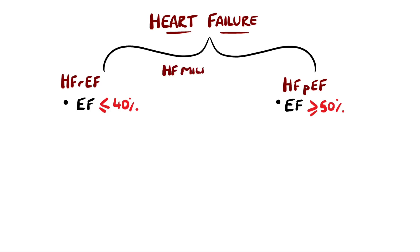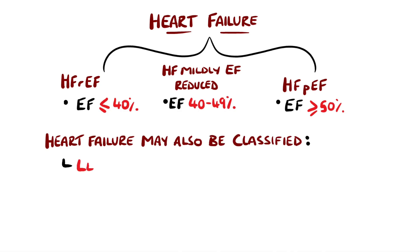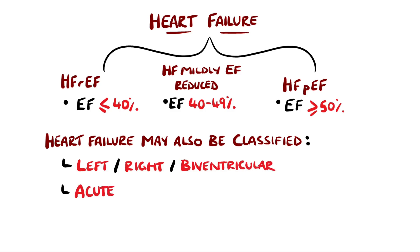More recently, a third subgroup was introduced called heart failure with a mildly reduced ejection fraction, where the ejection fraction is 40–49%. Heart failure can also be left-sided, right-sided, or biventricular, and based on the symptom onset may be acute or chronic.